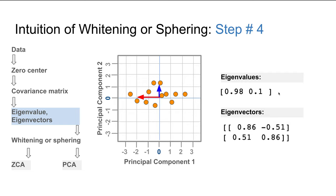By using the SciPy linear algebra library, we get two matrices: for eigenvalues we get a one-dimensional vector, and for eigenvectors a two-dimensional matrix. The eigenvalue of 0.98 corresponds to the eigenvector given in columns — the first eigenvector is [0.86, 0.51]. Similarly, for the second vector [-0.5, 0.86], the corresponding eigenvalue is 0.1.